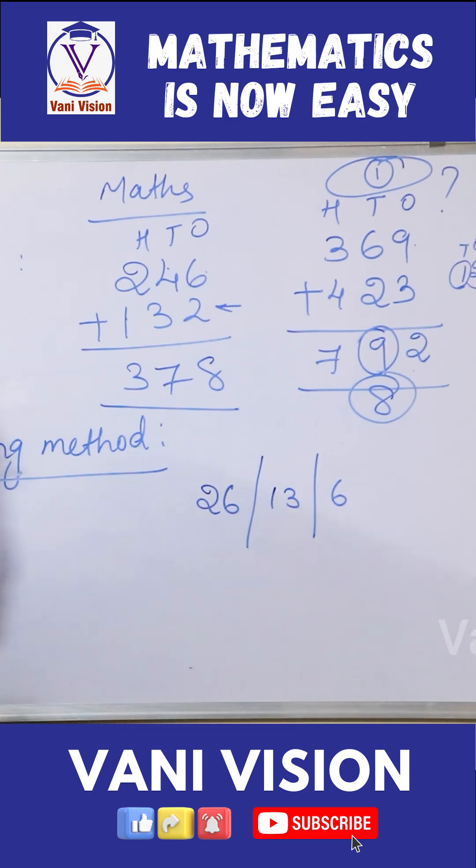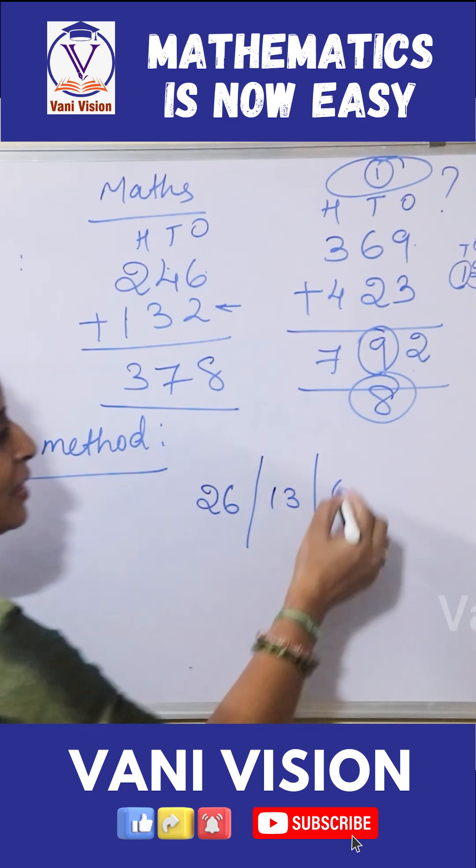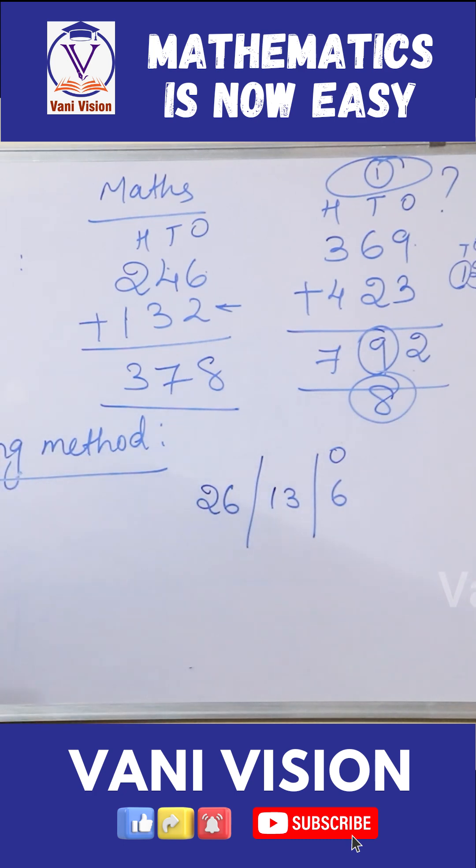I am considering the places for them. See, this one is under 1s only - one number is there, only one place, that is 1s. And here two numbers are there, two places will be there - that is 1s and 10s. And the next one, two numbers are there, two places - 1s and 10s.